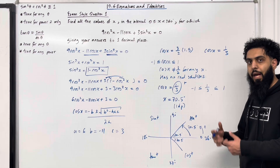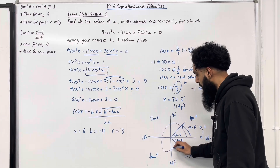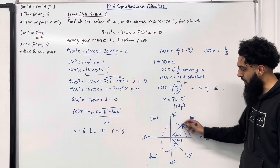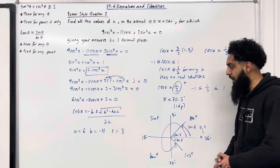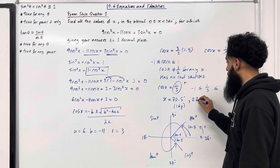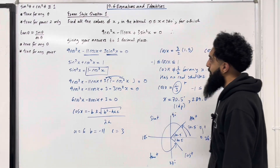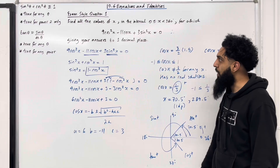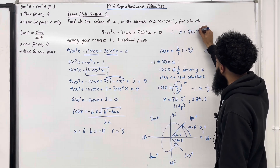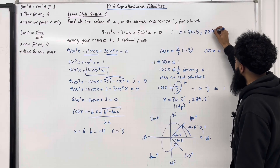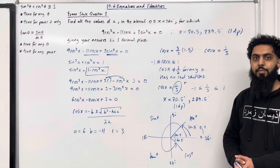This acute angle helps me calculate the second positive solution. Starting at 0° and going anticlockwise to the second line in the cosine quadrant, the second solution is 360° − 70.5° = 289.5°. Therefore, the complete solutions to this trigonometric equation are x = 70.5° and x = 289.5° to one decimal place. That completes exam style question 1.